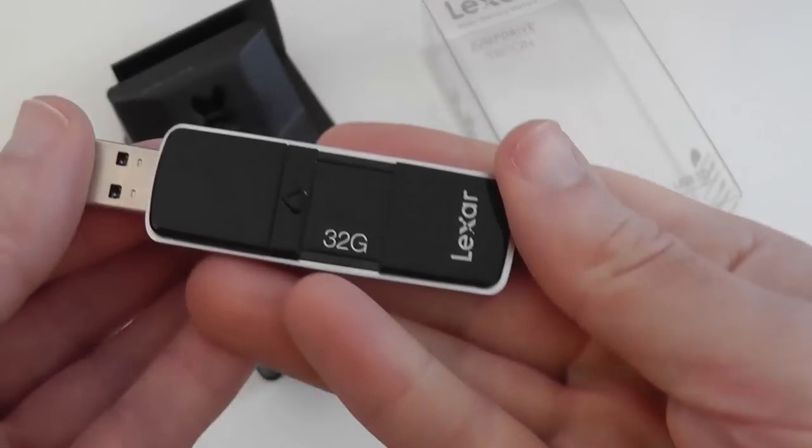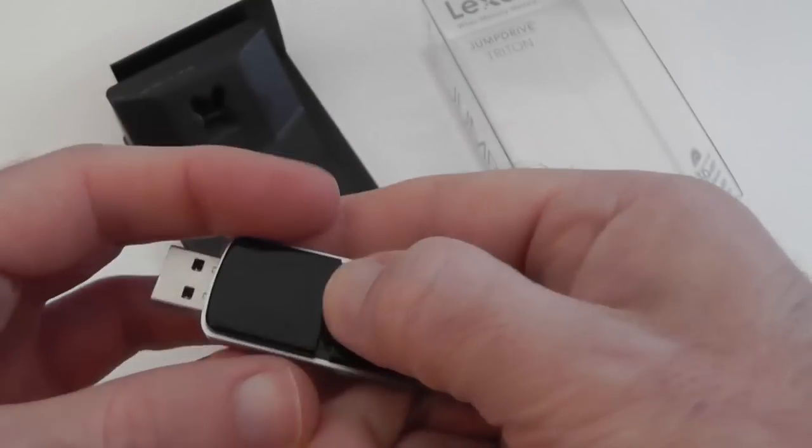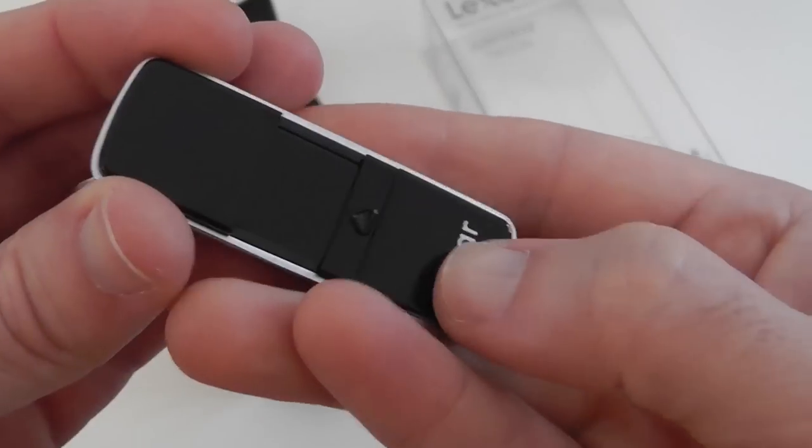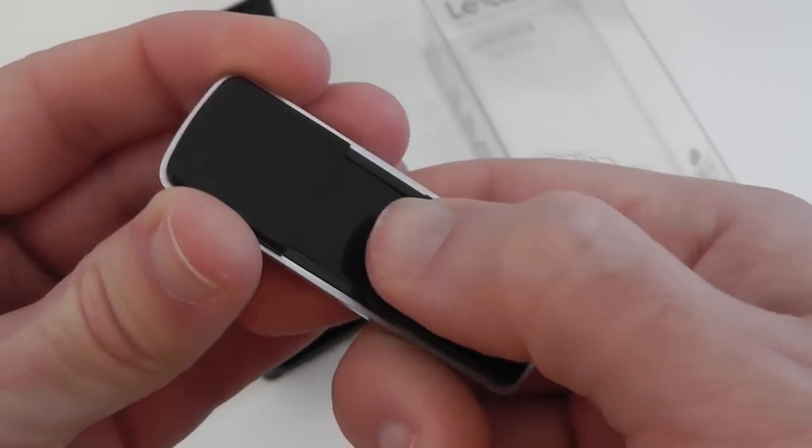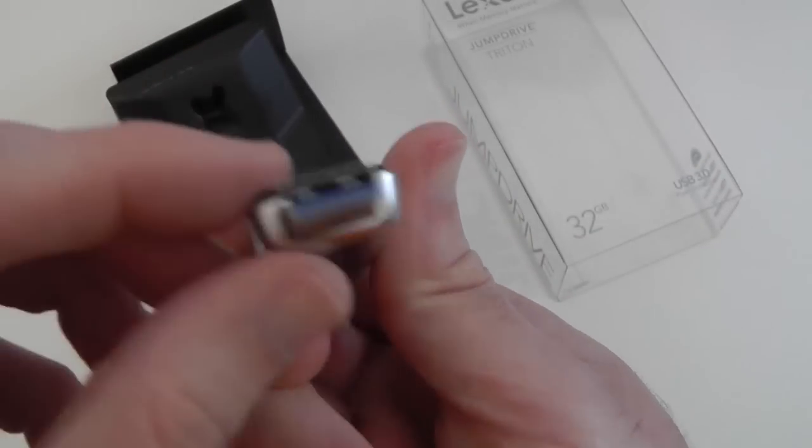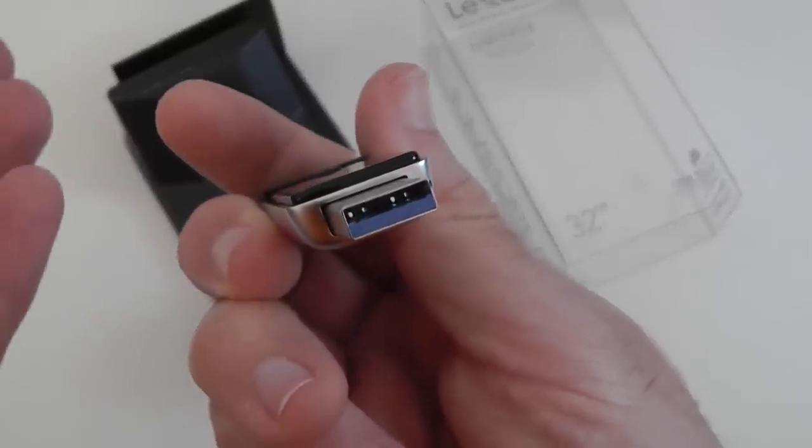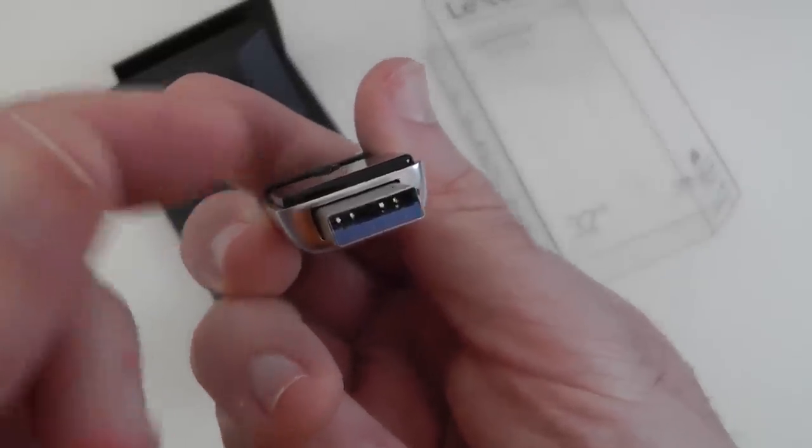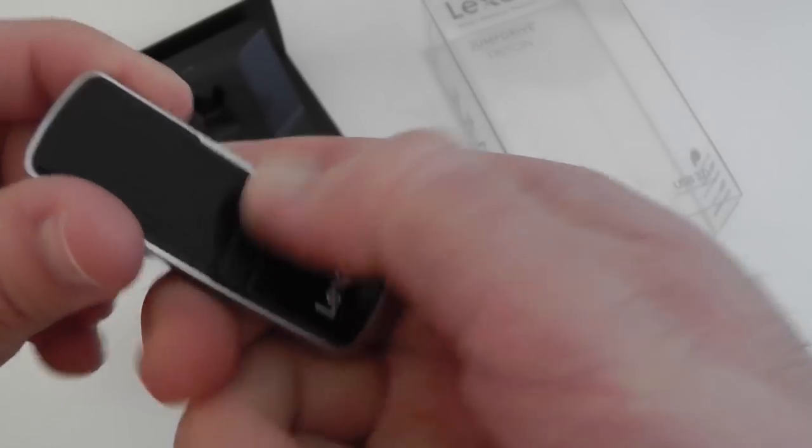So here it is, looks very nice. Now one of the features of this is the retractable connector. You've got this little sliding portion here which slides in and out like so, and this keeps the USB 3 backward compatible with USB 2 connector nice and safely tucked away.